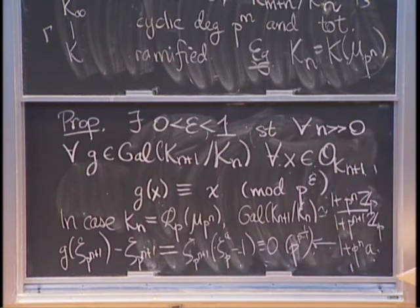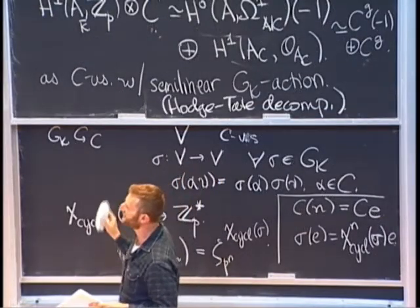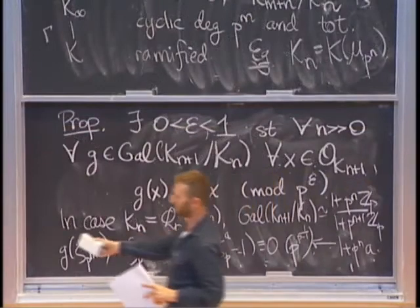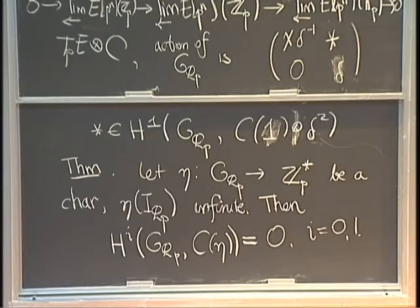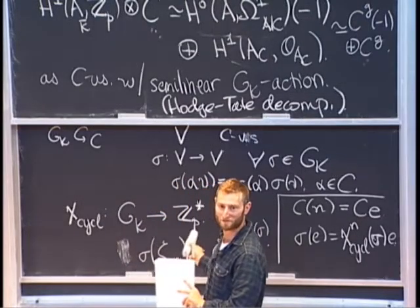So Tate uses propositions like this to come up with a theory of what he calls normalized traces. And normalized traces are the main tool he uses to prove this cohomological theorem. That's a very beautiful story, but I also want to talk about fields of norms, so I want to take the discussion away from Tate's paper for the moment.